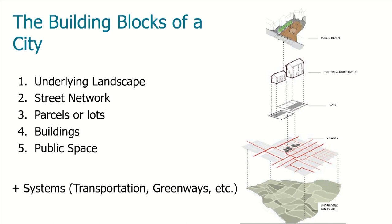The second is the street network. There is no more important element in the built environment than where streets go and how they connect. When a street is built, all the utilities are put underneath it, like pipes and electricity. Right-of-way is created, which delineates the legal boundaries between public and private land. All of this is extremely complicated to change, almost impossible in some cases. In Europe, many of the streets still used today were built by Romans. How streets connect can have a huge impact on things like the amount of traffic, if you can walk to places from your home, if the bus system can work efficiently, and if local businesses can be successful.